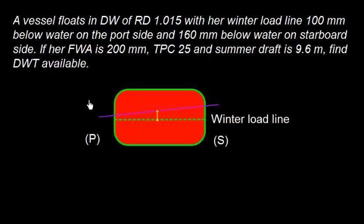We are looking at the ship in transverse direction, which means port and starboard direction. Suppose this is the water line here. This dotted line indicates the winter load line.